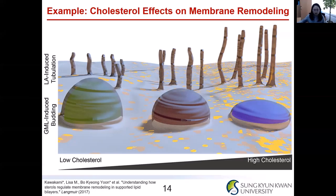The difference is that the extent of the membrane response depends on the cholesterol fraction in the membrane. For the GML case, as the cholesterol fraction increases, the extent of bud formation decreases. But for the lauric acid case, much more tubular formation is observed.